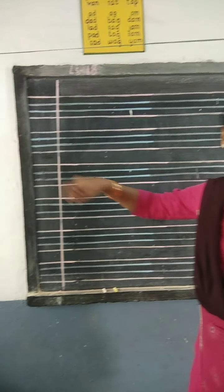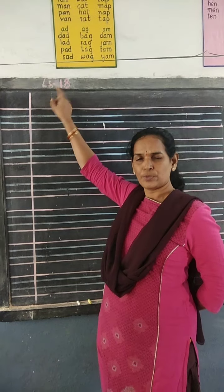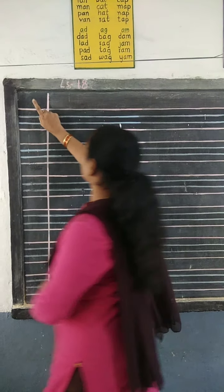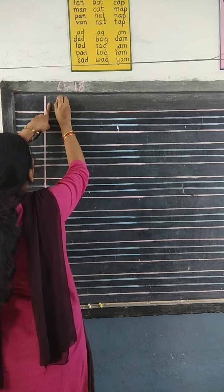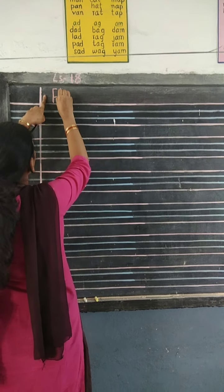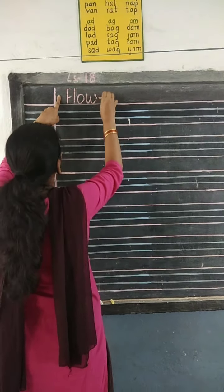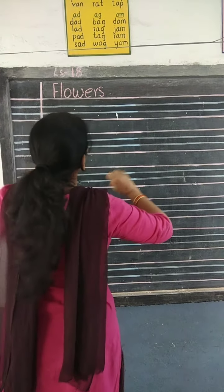Open and start writing the date. Okay? After the date, write lesson number 18 on the top in small letters. After the date, fingers face, write 'flowers' — F-L-O-W-E-R-S. Flowers. Okay?